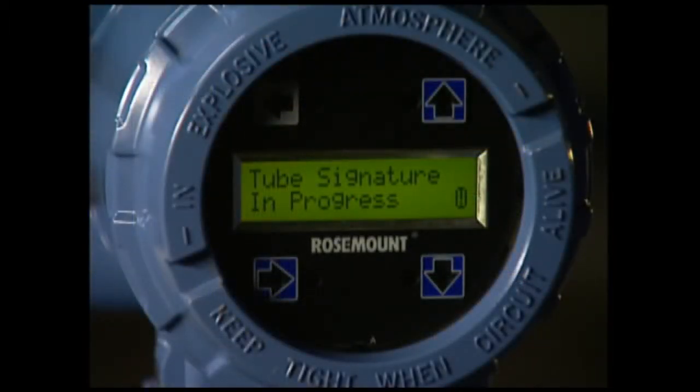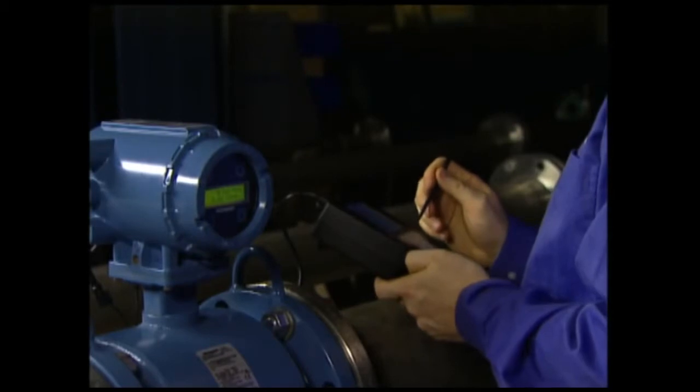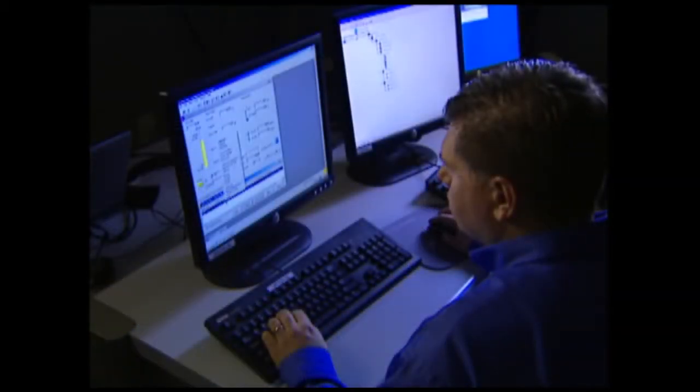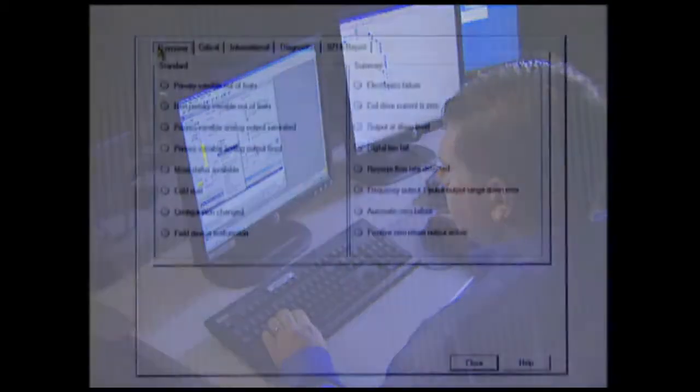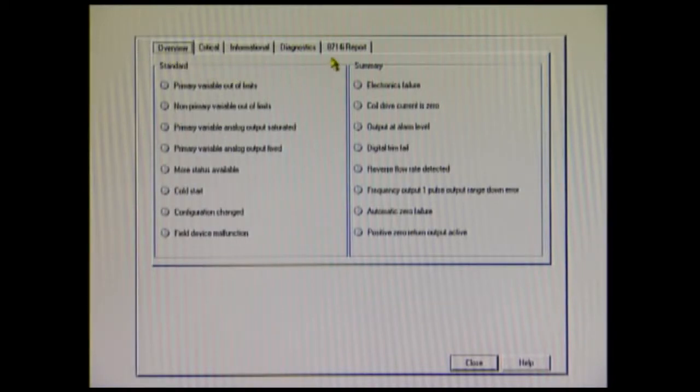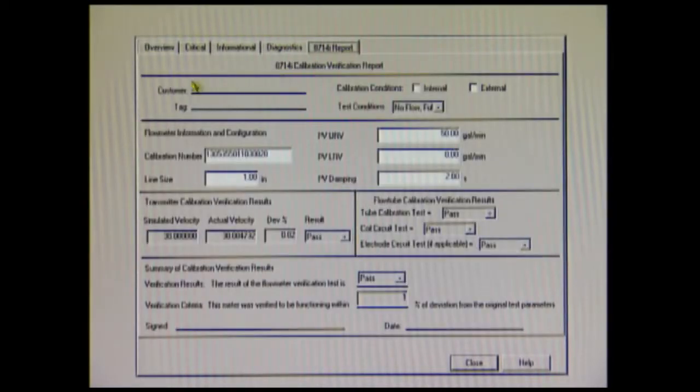The 8714I diagnostic can be initiated via the local operator interface, a 375 field communicator, or AMS Device Manager software. With AMS Device Manager, verification results are automatically entered into a report that can be printed out for your records.